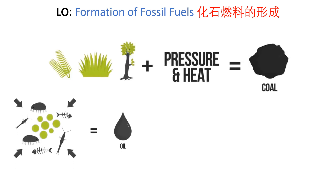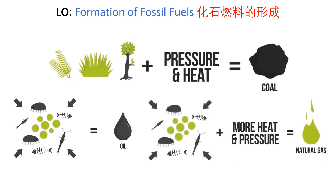Oil is slightly different. Oil is primarily formed from very small living organisms such as zooplankton, insects, or algae. This is acted upon by large amounts of pressure after being buried underground for millions of years. Gas is very similar to oil — the only difference is that gas has been acted upon by larger amounts of heat and larger amounts of pressure.